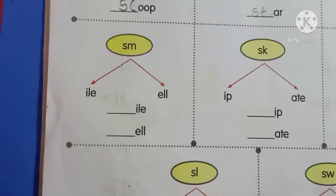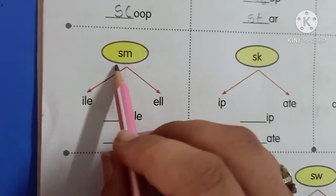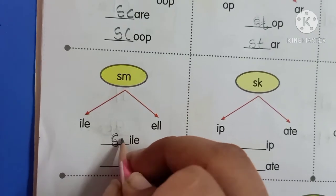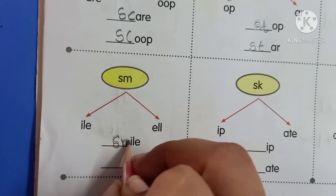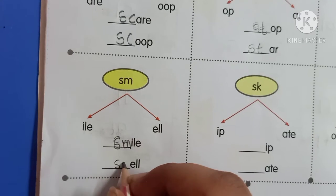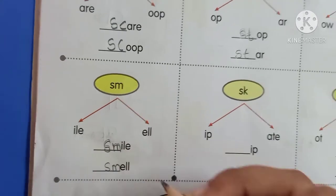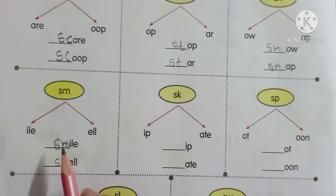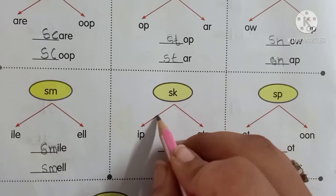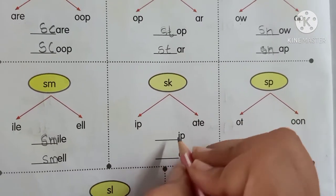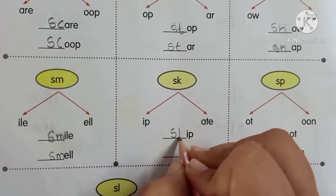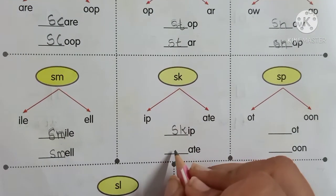Now kids, next. S, M — smile, smell. S, K, I, P — skip.